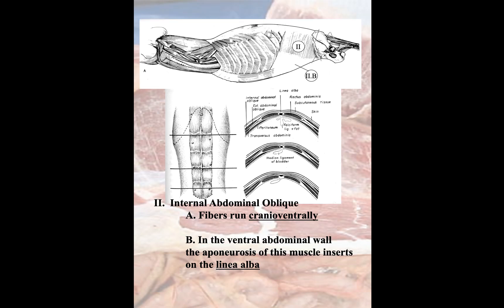The next muscle is the internal abdominal oblique muscle. Its fibers run in the opposite direction from the external abdominal oblique — in a cranial-ventral orientation. Again, this muscle has an aponeurosis, and this aponeurosis inserts into the linea alba.